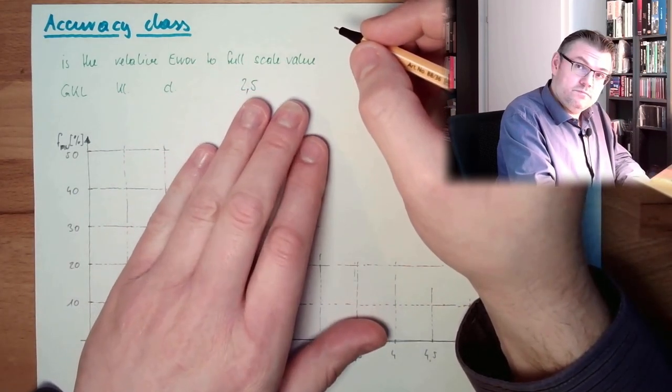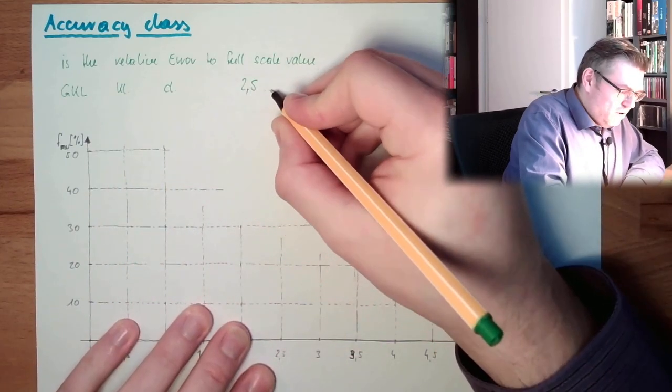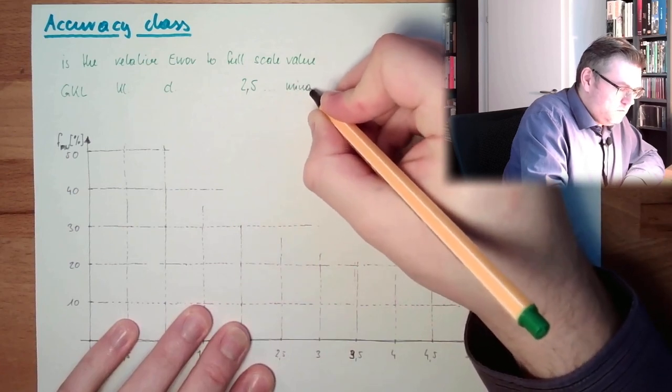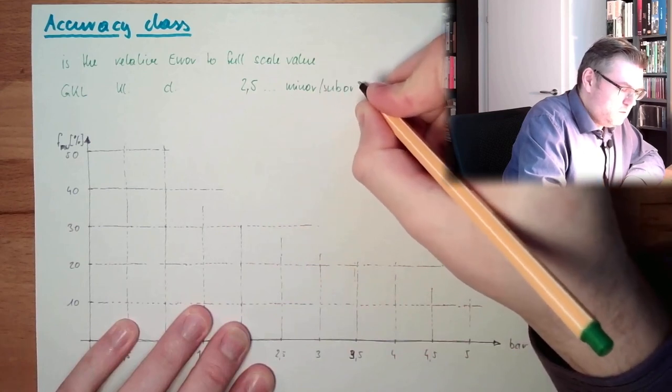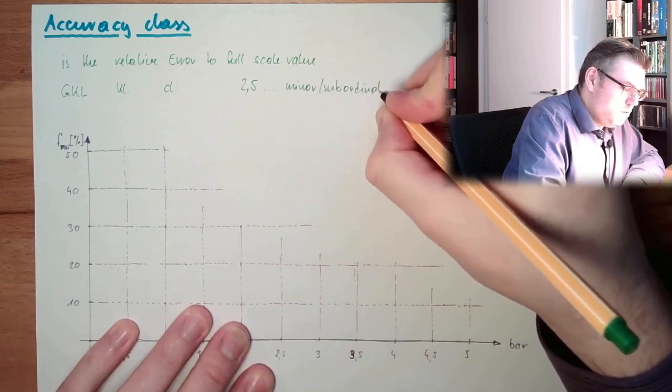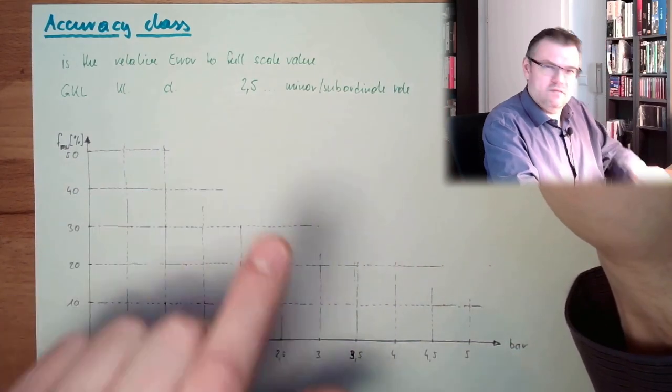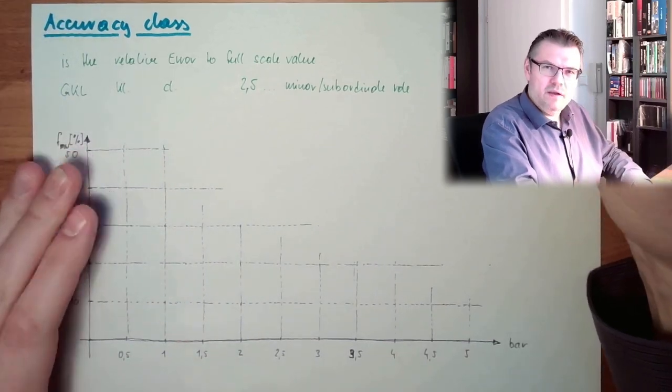This is very bad. These are for minor roles, subordinate role. 2.5 - bah! This cheap measurement device. Bad!